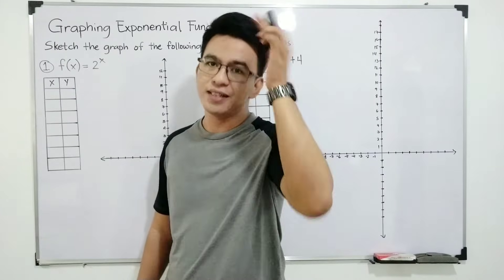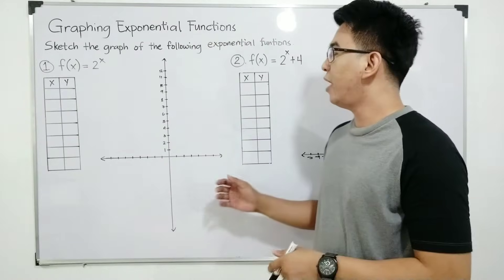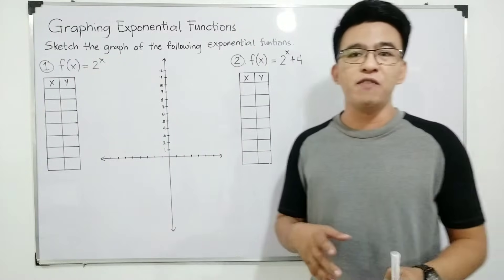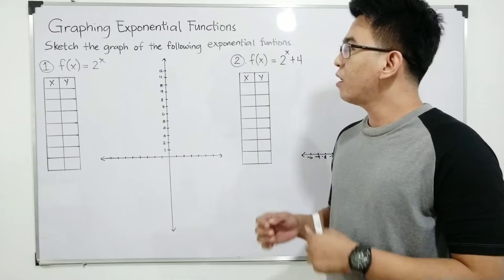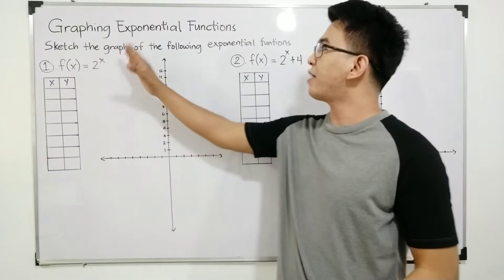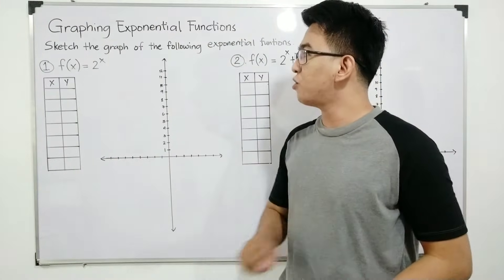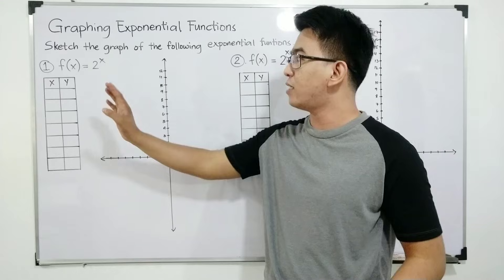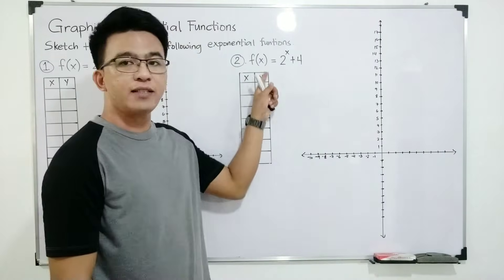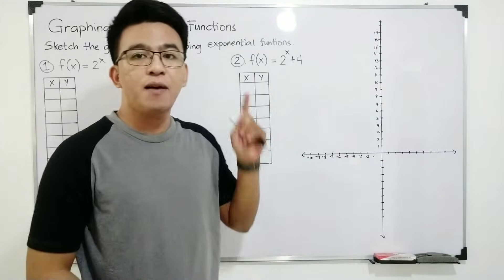So without further ado, let's do this topic. So I have here two different examples, and I will put the Cartesian plane in two examples so that we don't have too long videos. We are given here the problem or the direction: sketch the graph of the following exponential functions. The first function is f(x) = 2 raised to x, and the other is f(x) = 2 raised to x plus 4.